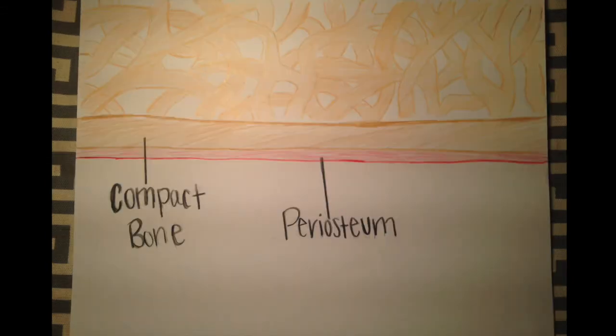Osteoblasts on the outer surface of compact bone can become less active, and with the help of connective tissue around the bone, a protective outer layer called the periosteum can be formed.